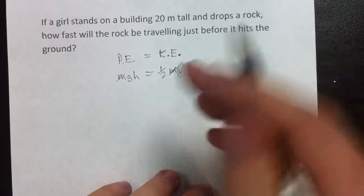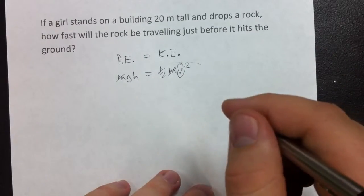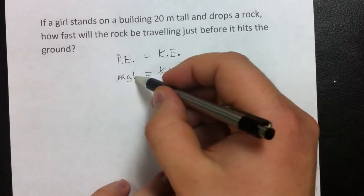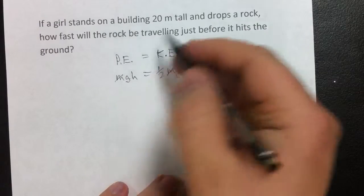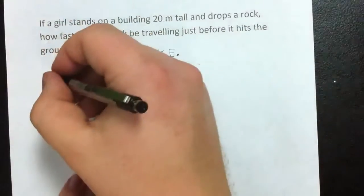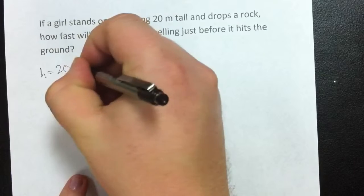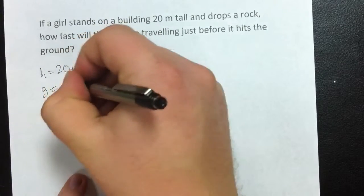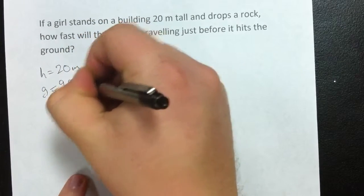This velocity squared will give us our final velocity just before it hits the ground. So, let's take gravity times height, first of all. Our height is given by 20 meters, by the way.